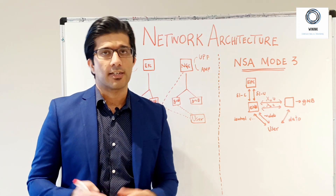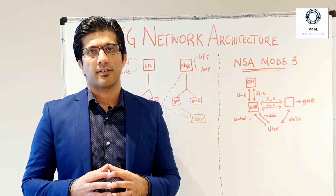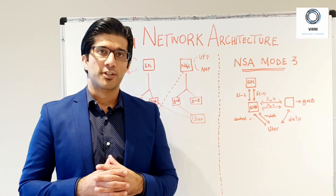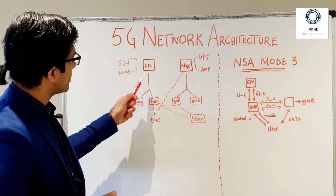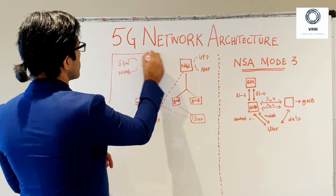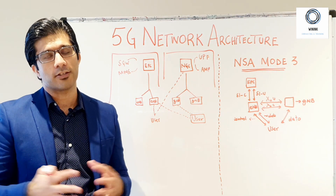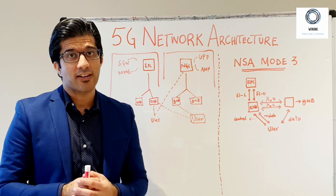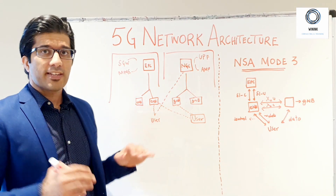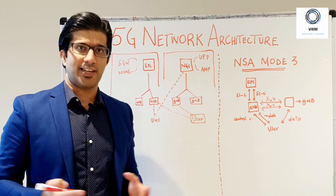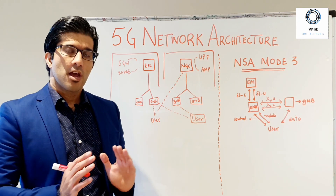We will begin with a block diagram of the 5G network and right beside it we will show the LTE network, so we can see the differences and the new terminologies being used in 5G. In LTE, the core network was known as EPC — the Evolved Packet Core — which consisted of an SGW (the serving gateway) and the MME. The MME controlled all the mobility functionalities, while the control plane and user plane were handled by the SGW.